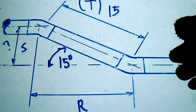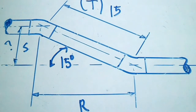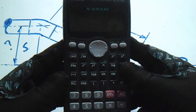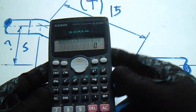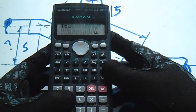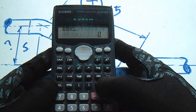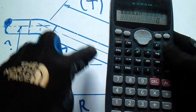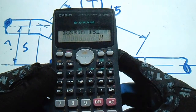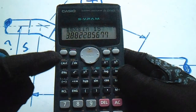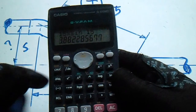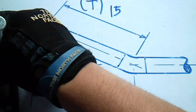Set equals travel multiplied by sine. I will show you on a calculator using the FX-100MS. So to get that, with travel 15, multiply it by sine of 15 degrees. The answer is 3.88, so we round it to 3.9. Our set is 3.9.